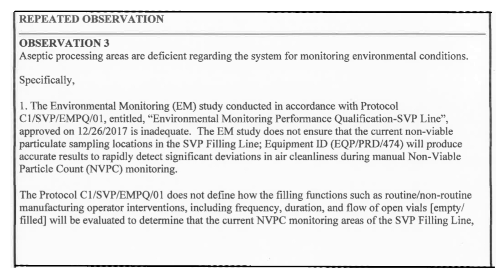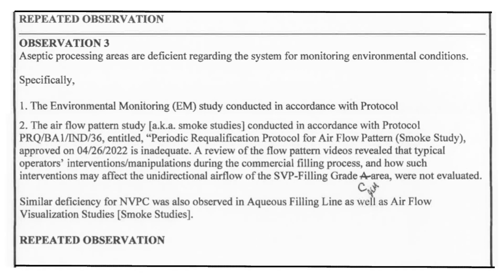Observation number three, also a repeat observation: aseptic processing areas were deficient regarding the system for monitoring environmental conditions. Auditors stated that environmental monitoring does not ensure that current non-viable particulate sampling locations in the SVP filling line will produce accurate results to rapidly detect significant deviations in air cleanliness. Additionally, auditors reviewed smoke study videos of the SVP filling area and found sudden manual interventions done by operators. The firm had not evaluated the impact of these manual interventions during the smoke study — the same issue was previously observed at Sun Pharma's Halol facility.